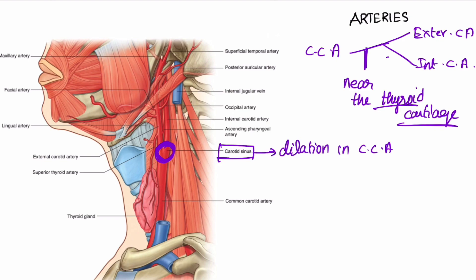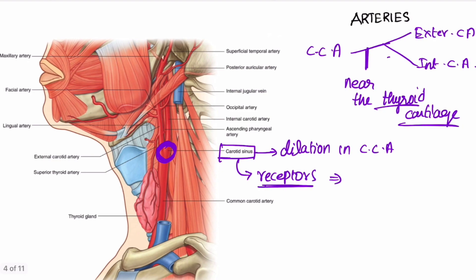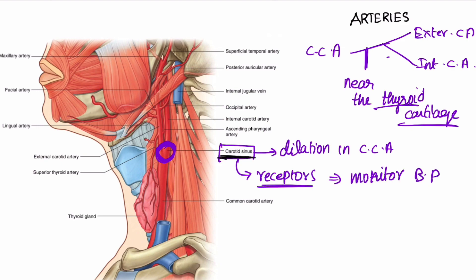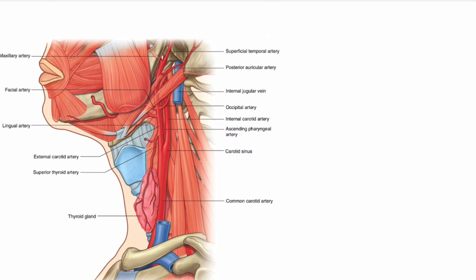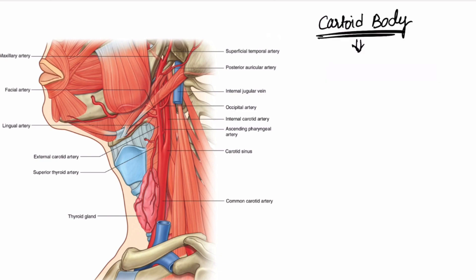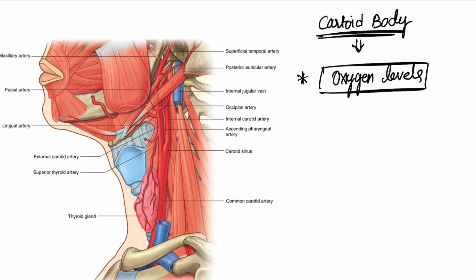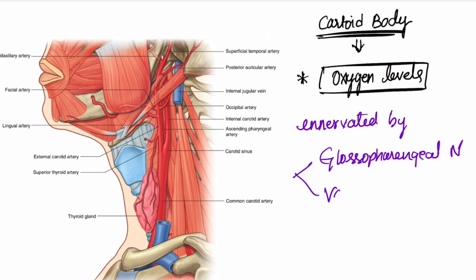The carotid sinus contains receptors that help monitor blood pressure. It is innervated by the glossopharyngeal nerve. We also have receptors in the carotid body that detect changes in oxygen levels. The carotid body is innervated by the glossopharyngeal nerve and also the vagus nerve.